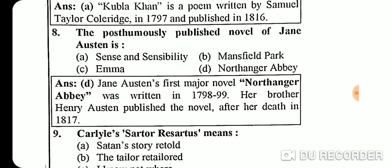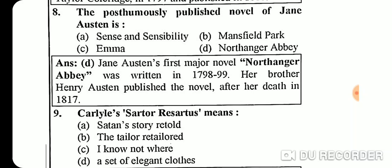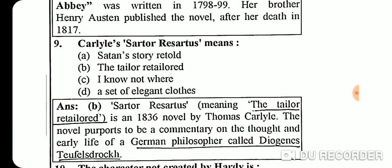Question 8: The posthumously published novel of Jane Austen is Northanger Abbey. Jane Austen's first major novel, Northanger Abbey, was written in 1798-99. Her brother Henry Austen published the novel after her death in 1817.